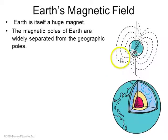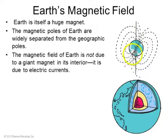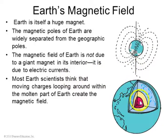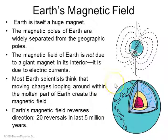The Earth itself is a huge magnet — there's a magnetic field just due to the nature of the Earth. Magnetic poles of the Earth are at the north and south poles, one up in Canada and one down in Antarctica. It's due to electric currents inside the iron core of the Earth. There is geological evidence that the Earth's magnetic field reverses direction and has done so about 20 times in the last 5 million years.